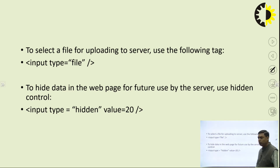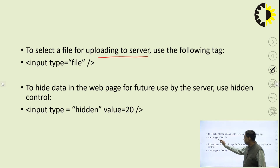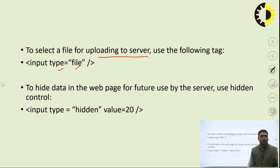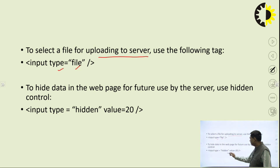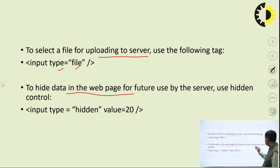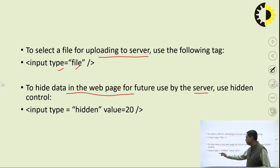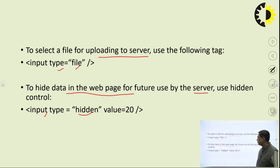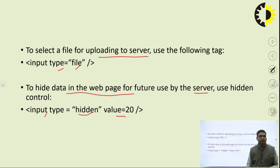If you want to upload a file to the server, use input type equal to file. A box will be created where you can select a file and click submit to upload it. If you want to hide some data that is not visible to the user but may be used by the server or other applications, use input type equal to hidden and provide a value that can be processed further.